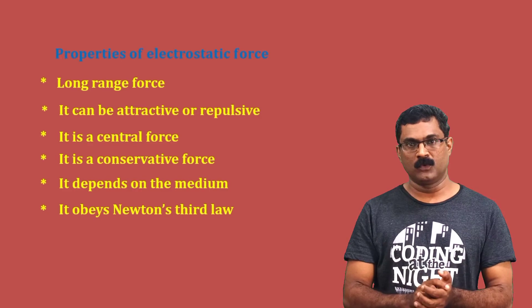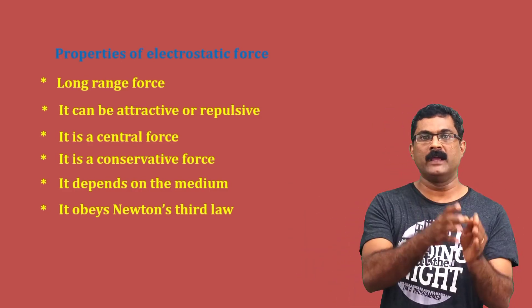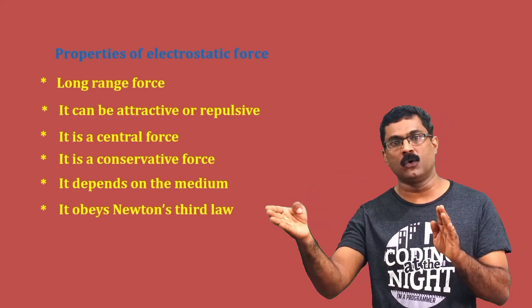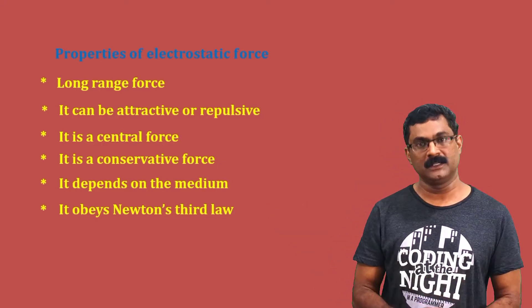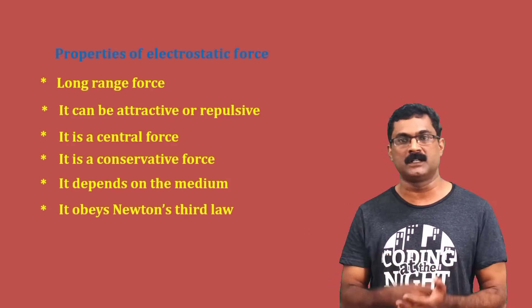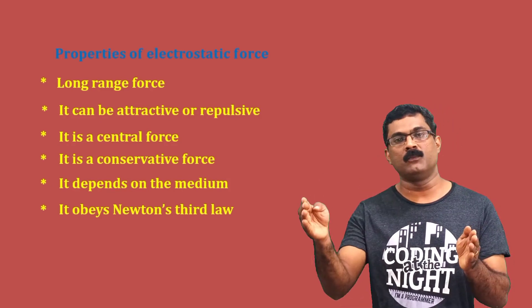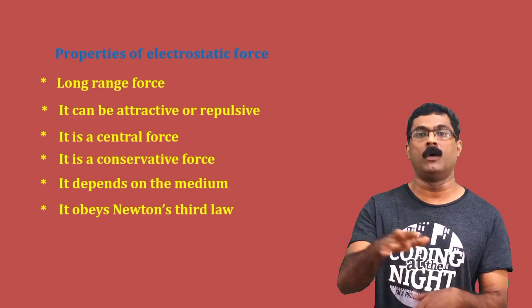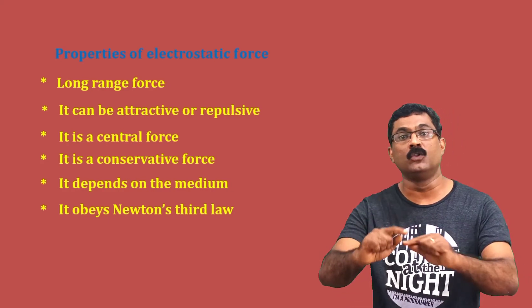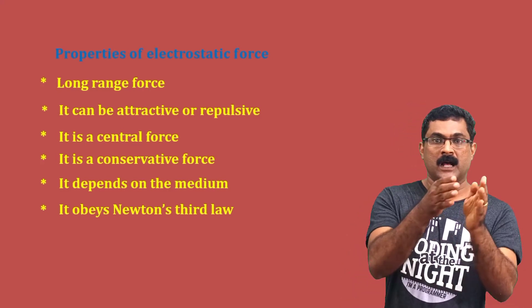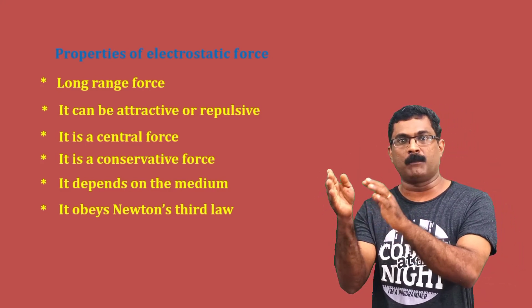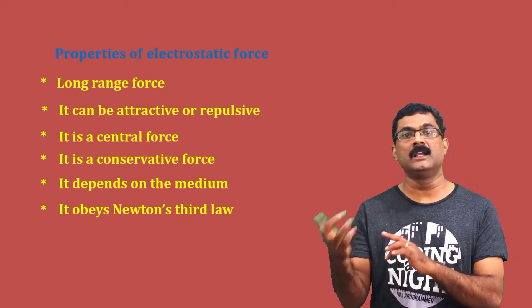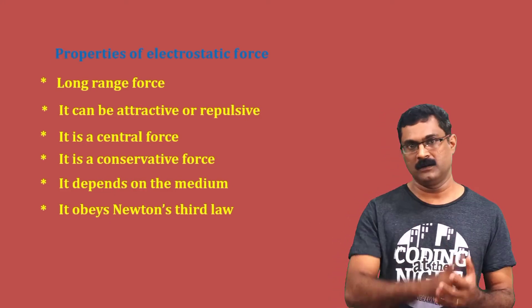You have two charges: 5 coulomb and 3 coulomb. The force between them is F. By Newton's third law they are equal and opposite, so the force on 5C due to 3C is also F, but in the opposite direction. The ratio of the magnitudes is 1:1. This is a very important point.